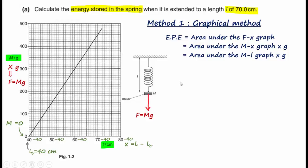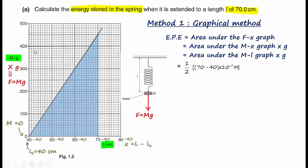The area under the m-L graph when L equals 70 cm is the area of a triangle. Using area equals half times base times height, we have half times (70 − 40) cm converted to meters, times the value of m when L is 70 cm, which is 450 grams, multiplied by g = 9.81. Converting all terms to SI units and putting it into the calculator gives 0.662 joules for the answer.